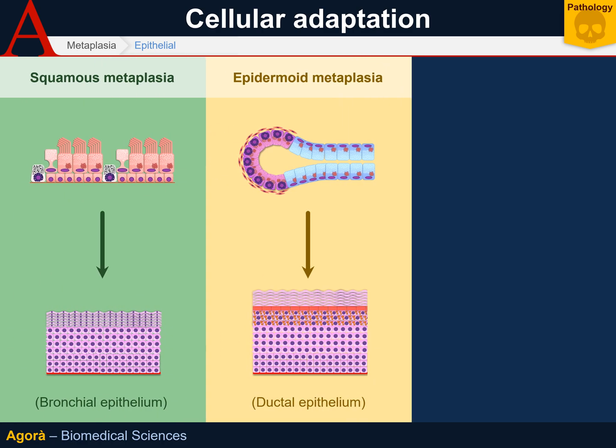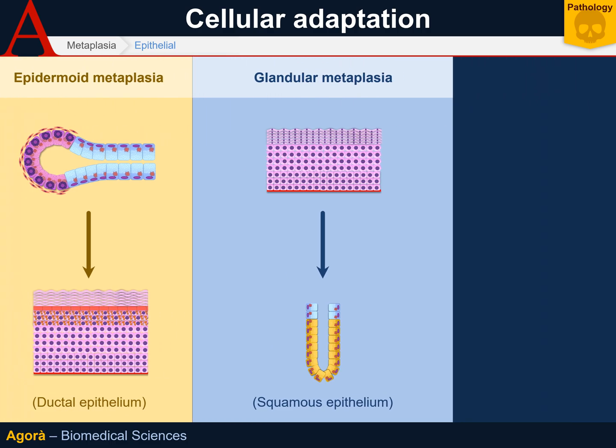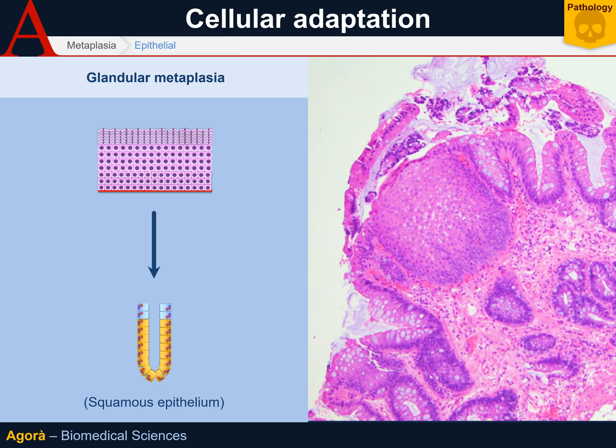Finally, glandular metaplasia is a phenomenon occurring when squamous epithelium converts to a glandular form. The simplest case is that of Barrett's esophagus, where at the end of the esophagus, after long-term damage caused by gastric acid reflux, the tissue converts to a gastric cardia epithelium producing mucus — and this is to render the esophagus acid resistant. However, this impaired tissue does not produce enough mucus and continues damaging the epithelium due to its physical resistance.